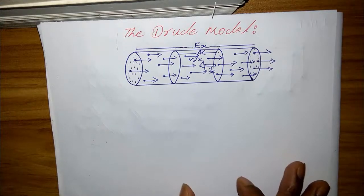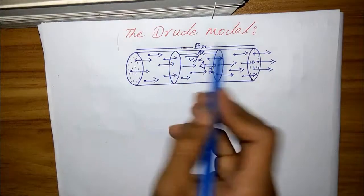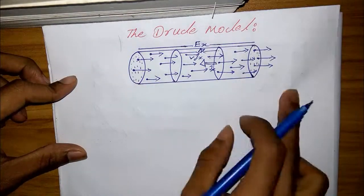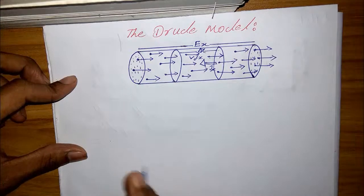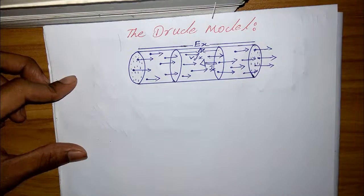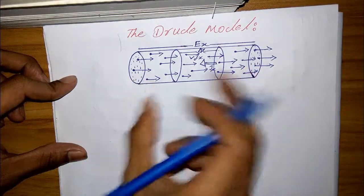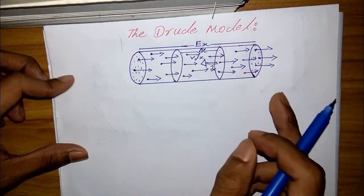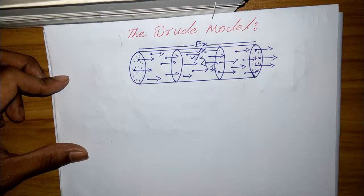Hello everyone, now I discuss the Drude model. Here is the figure of the Drude model. Mainly conduction electrons move randomly in a metal under the influence of external field.